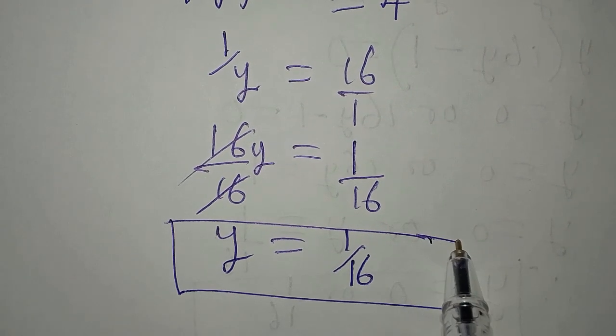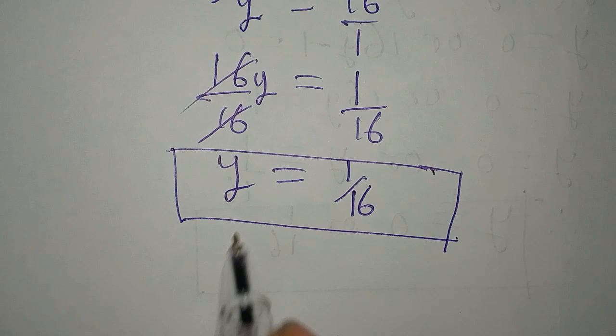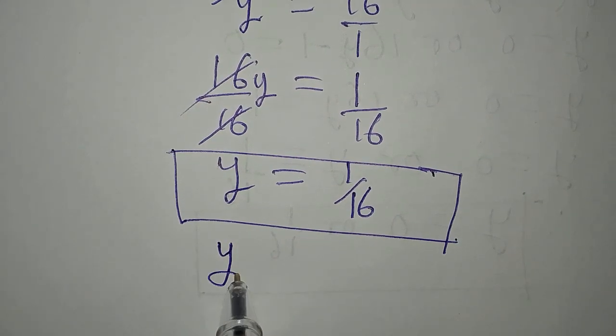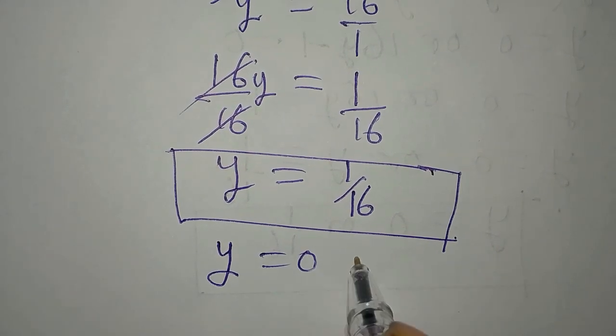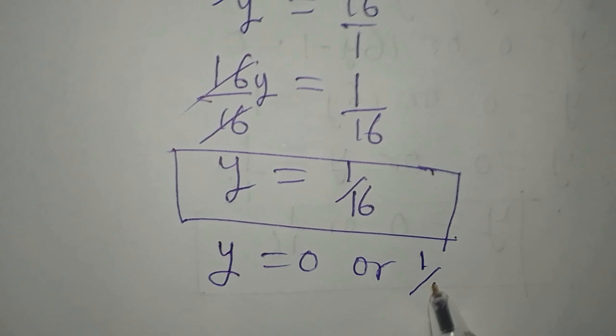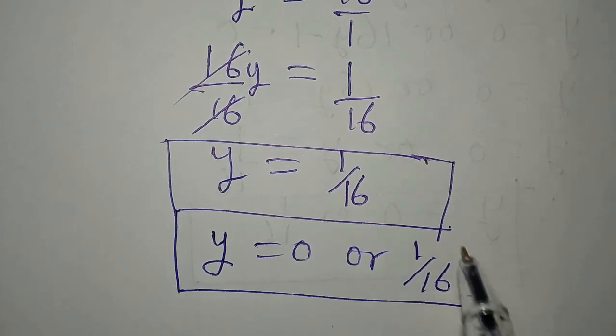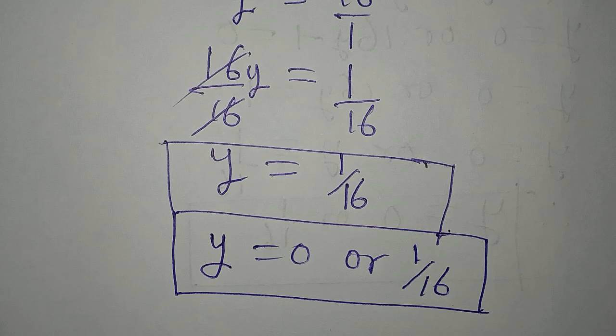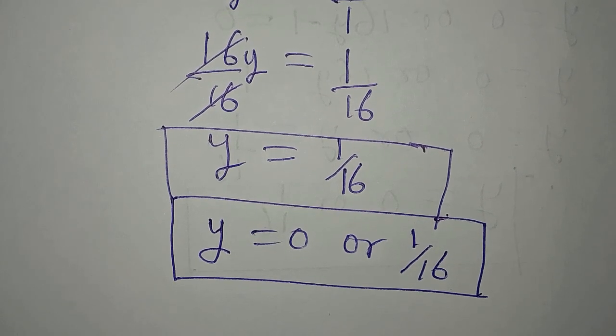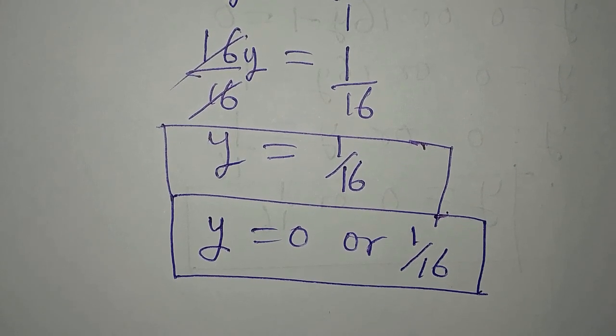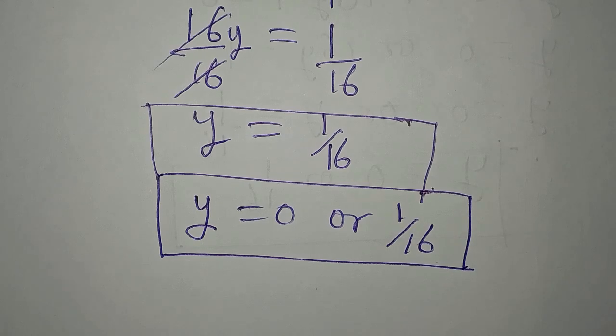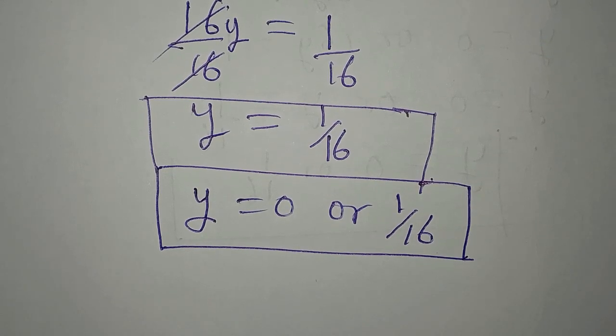This is going, and y is equal to 1 over 16. So this is what we have from the second method. And from the first method we had y to be equal to 0 or 1 over 16. Now which of these two methods is giving us the better solution or which of them is more suitable?